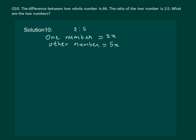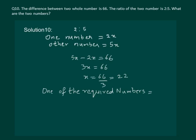It is given in the question that the difference between two whole numbers is 66. That means 5x minus 2x is equal to 66. Let us solve this. We have 3x is equal to 66.